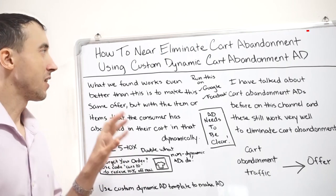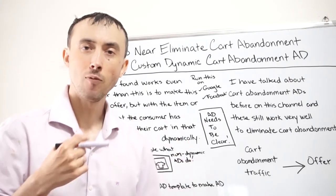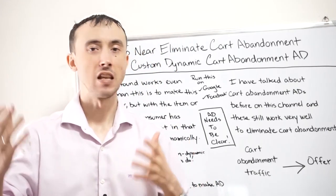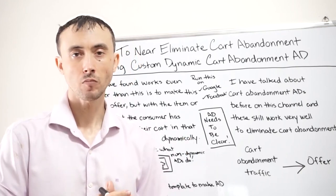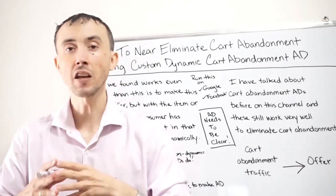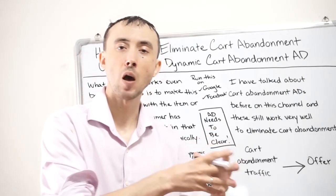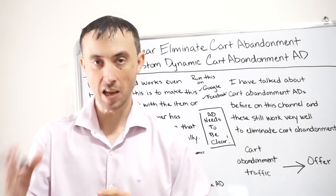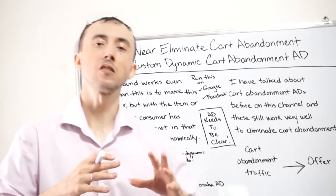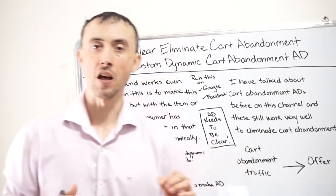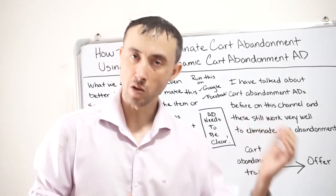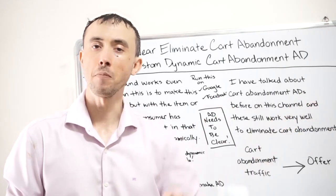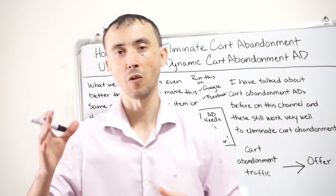What we're going to talk about is a way to dynamically create an ad for somebody who got to the shopping cart and did not buy — for whatever reason, checking around, didn't like the shipping cost, whatever it is — and put the product they were looking at in the ad along with some other elements that work extremely well, to the point where you can get a 5 to 10x ROI on the ad campaign, tightening up your funnel so you aren't losing people right before they purchase.